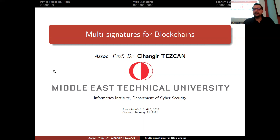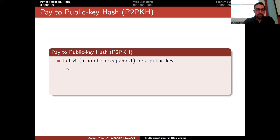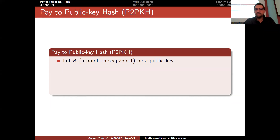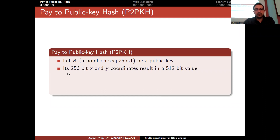Let's start with the single signature case where we pay to public key hash. Let K be a point on the elliptic curve — this is the elliptic curve of Bitcoin, so this is a public key. Any point generated by the generator of the group can be used as a public key. If you know the private key for this public key, you can receive funds using it. The point has two coordinates, each 256 bits, so it can be represented as a 512-bit value — but that is huge and hard to represent.